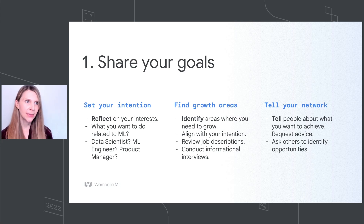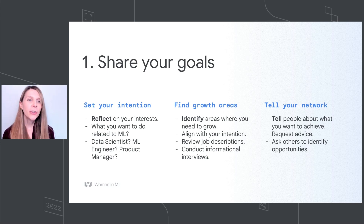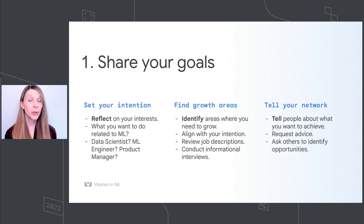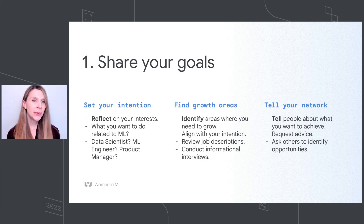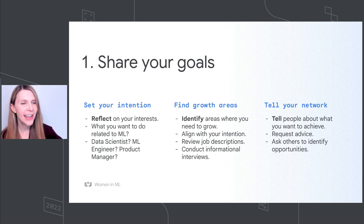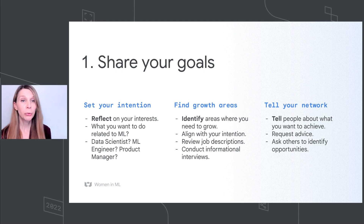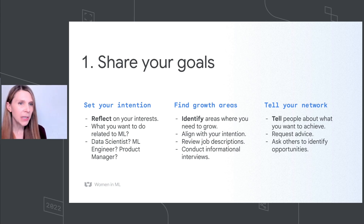Number one: share your goals. I think this is really critical, especially as you're thinking about exploring new areas or going deeper in machine learning. I mentioned in my story that I made an off-the-cuff comment that actually turned into a whole career in machine learning. So when I talk to people about how they can get involved, I think it's very important that you share your goals. Within that, a few things you can do: really set your intention for machine learning — what you want to do and how you want to get involved. Do you want to be a data scientist? An ML engineer? A product manager who uses machine learning in the products you're building? There are so many opportunities and ways you can get involved in ML. So think about what your intention is.